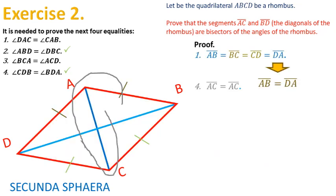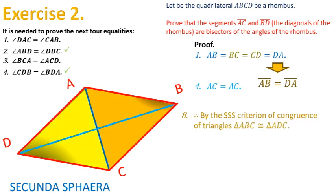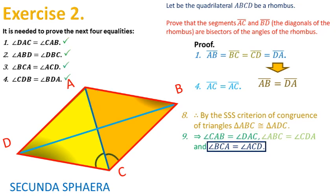Rearranging the sides, by the SSS criterion of congruence of triangles, the triangles ABC and ADC are congruent, hence their corresponding angles are equal. The angles CAB and DAC are equal, giving a third equality required. The angles ABC and CDA are equal, and the angles BCA and ACD are equal, giving the last equality required to complete the problem.